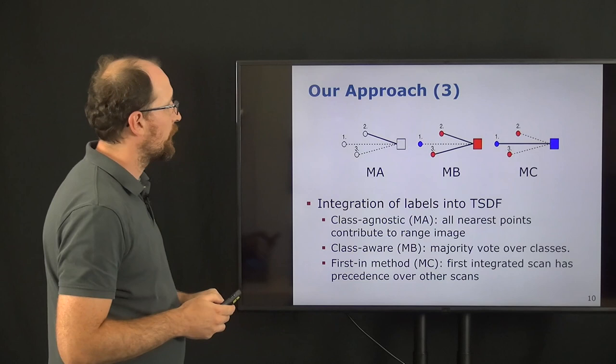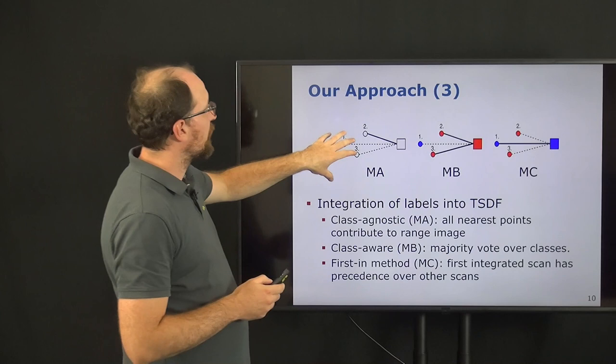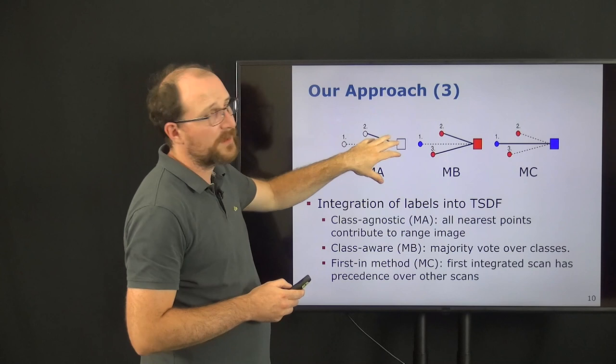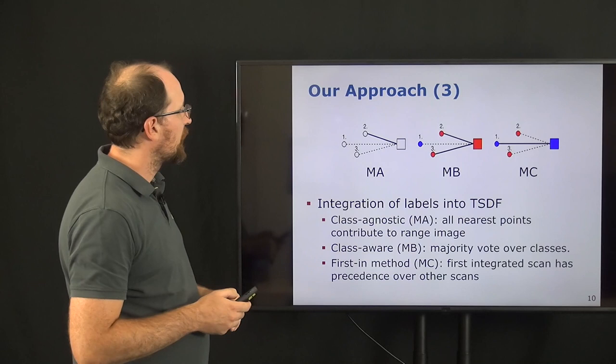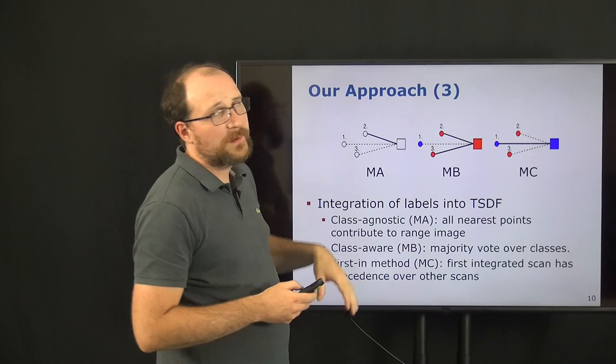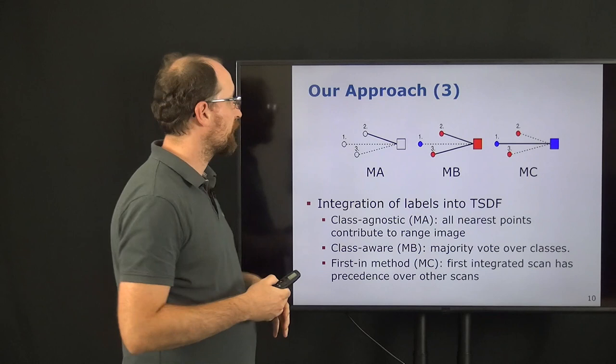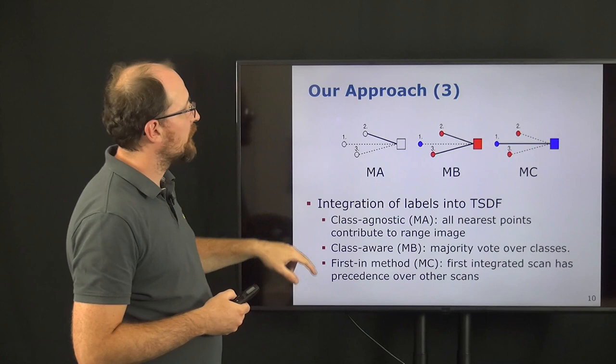For integrating the label information into the range image, we investigated now three different methods. Shown here are the points from different points of time that are getting projected into the same range pixel. And for this, we investigated now three methods, which the first one is the class agnostic closest point method, where we just use all nearest points that contribute to the range image. So that means we are not considering the time when the point was recorded and just take the label from the nearest point.